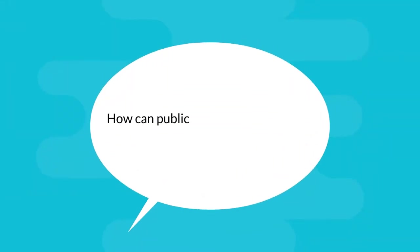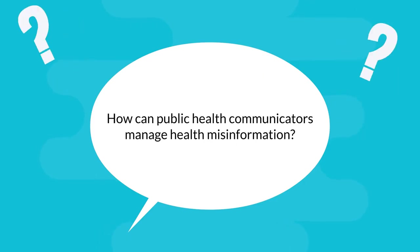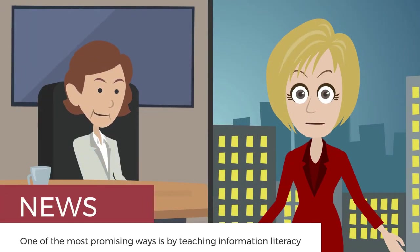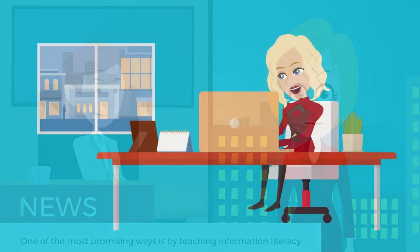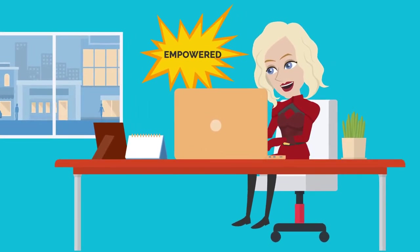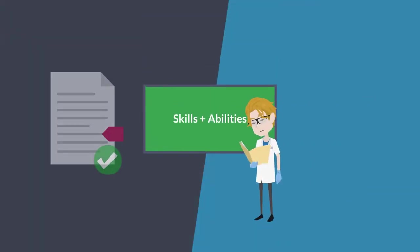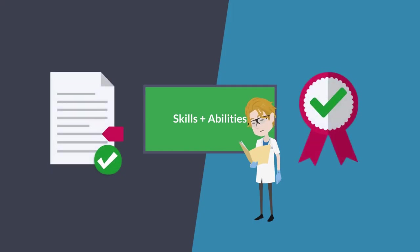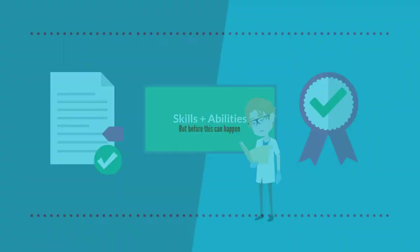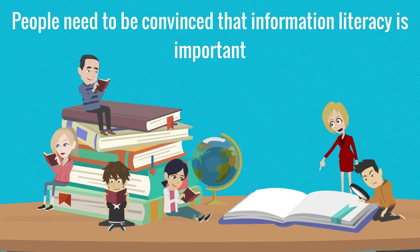So how can public health communicators manage health misinformation? One of the most promising ways is by teaching information literacy. This means that people can be empowered to fight the spread of misinformation if they have the skills to assess the accuracy and credibility of information they come across. But before this can happen, people need to be convinced that information literacy is important.